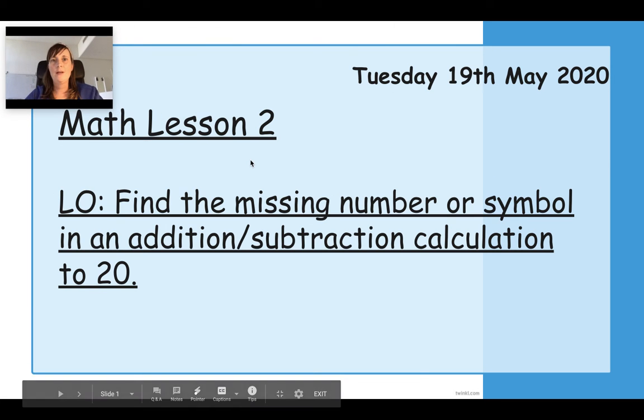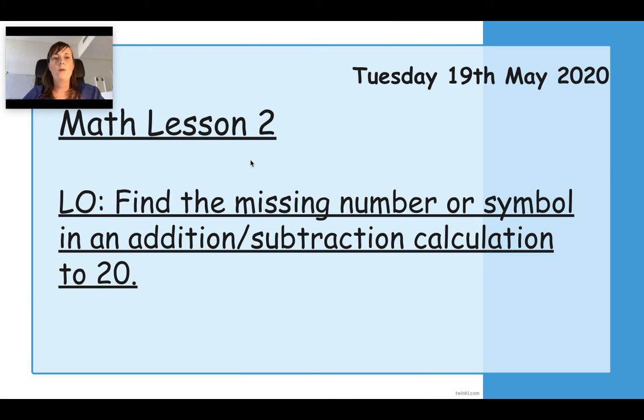Good morning everyone, how are you today? Welcome to our second last lesson of the week, lesson two. We're going to be carrying on today the same sort of work that we were doing yesterday. So we're going to be finding the missing number or symbol in addition or subtraction calculation to 20. There is a slight change - we might look at some symbols as well, but we're still thinking about adding and subtracting and there's missing numbers involved.